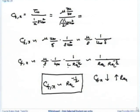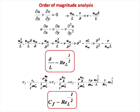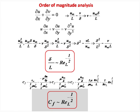We have found all functional forms — the only thing derivation will add is the constant 0.332. Without deriving we have got the functional form — that is the beauty. Delta by L is Re_L to the power minus half and Cf is of the order of Re_L to the power minus half.